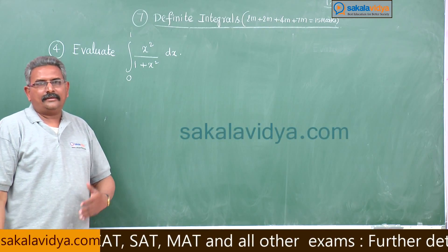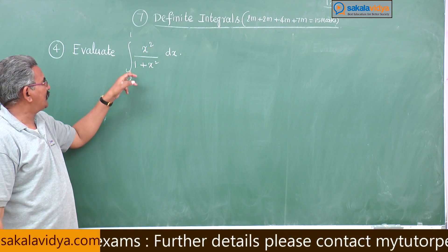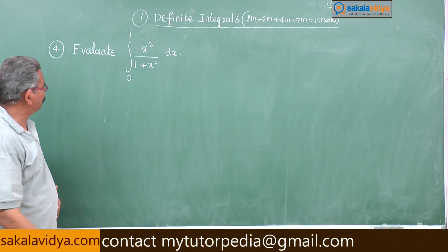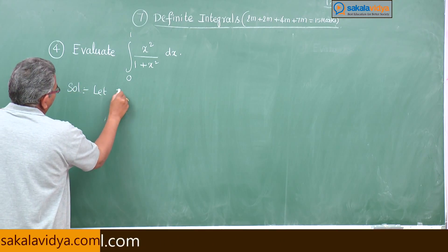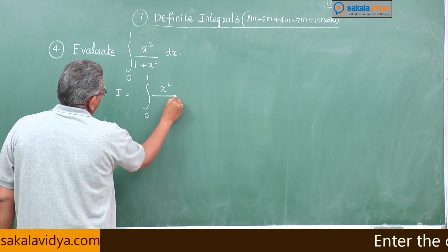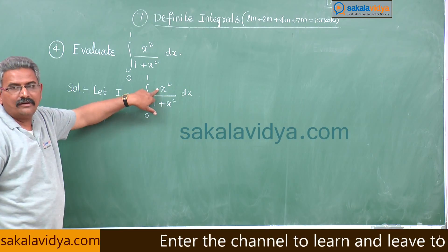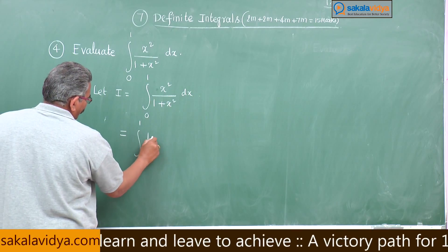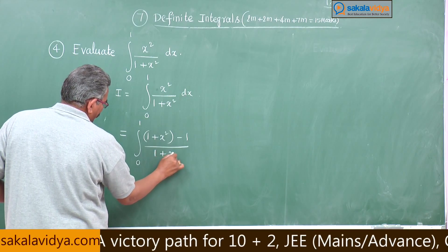In indefinite integration you may also be asked to evaluate integral x squared by 1 plus x squared dx — the same procedure has to be adopted. Let i equal to integral 0 to 1 of x squared by 1 plus x squared dx. In the numerator, add 1 and subtract 1. This is equal to integral 0 to 1 of (1 plus x squared minus 1) by (1 plus x squared) dx.